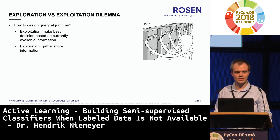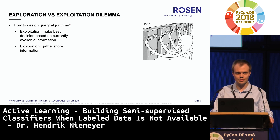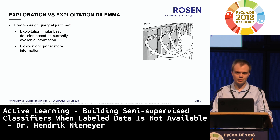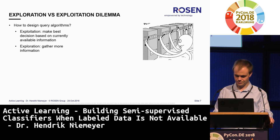Now I'll talk about the basic algorithms for selecting instances for the human annotator to label. These are divided into two main classes. The first class doesn't use information from a classifier but only information about the feature space itself. The second class mainly uses the classifier's predictions on the unlabeled pool to make its decisions. Both have their use: in the beginning you don't have a classifier yet, but at the end you need classifier information to fine-tune your decision boundary.